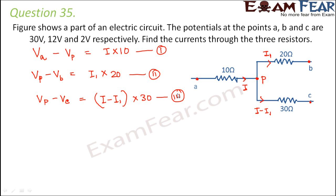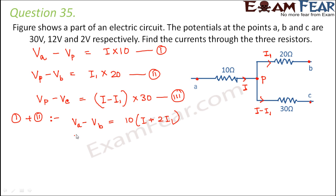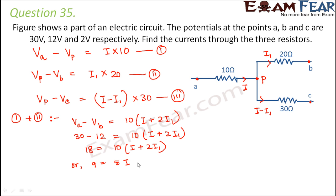We now have three equations to solve for I and I1. Adding equations one and two, we get Va minus Vb equals 10I plus 20I1. With Va = 30 volts and Vb = 12 volts, this gives 18 equals 10I plus 20I1, or simplified: 9 equals 5I plus 10I1. This is equation A.